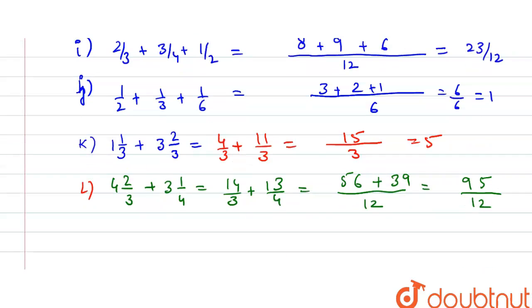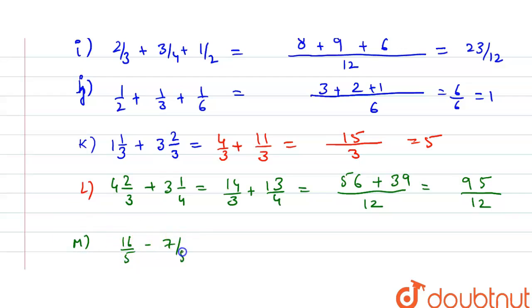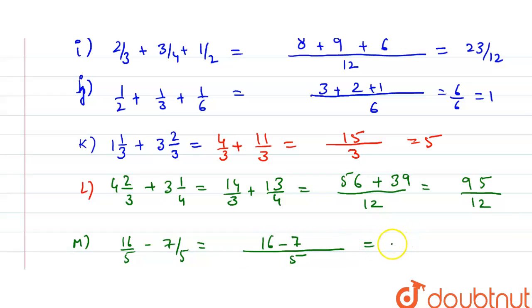Part (m) is 16/5 − 7/5. Since the denominators are the same, just subtract: 16 − 7 = 9, giving 9/5.